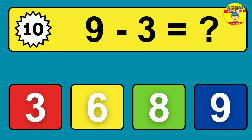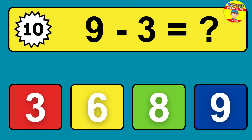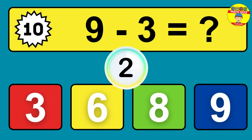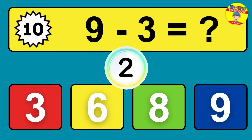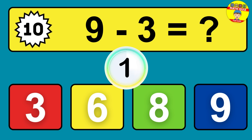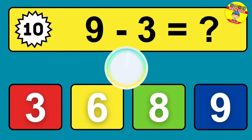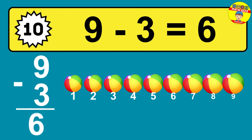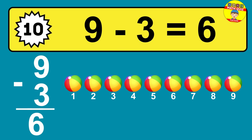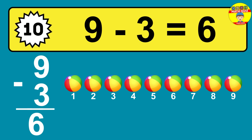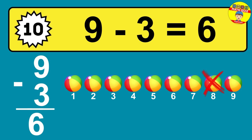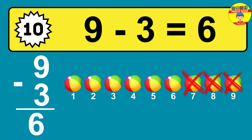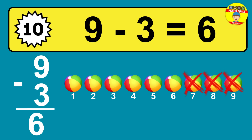Question 10: 9 minus 3 equals what? So the answer is 9 minus 3 is 6. Let's count it: 1, 2, 3, 4, 5, 6.